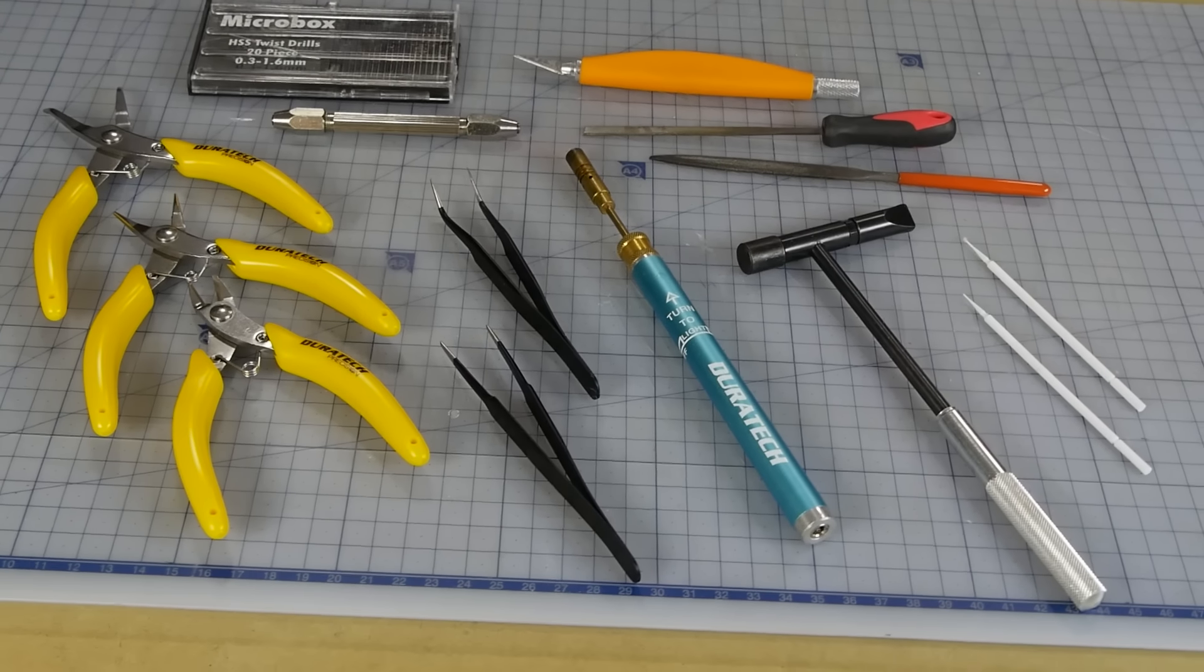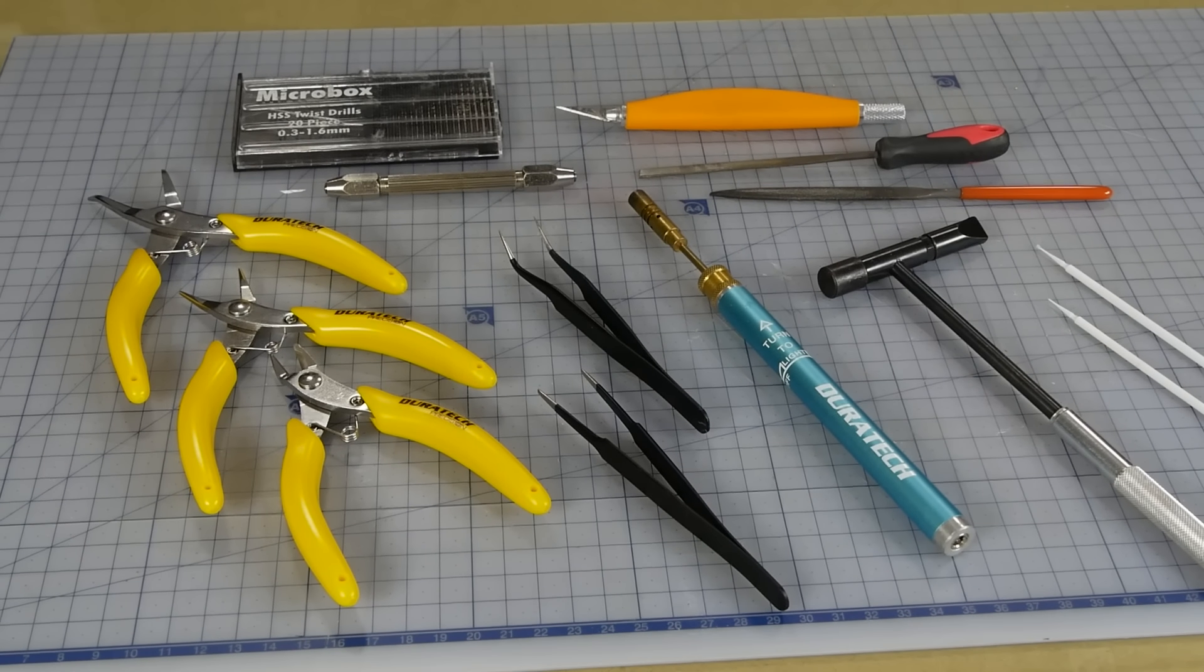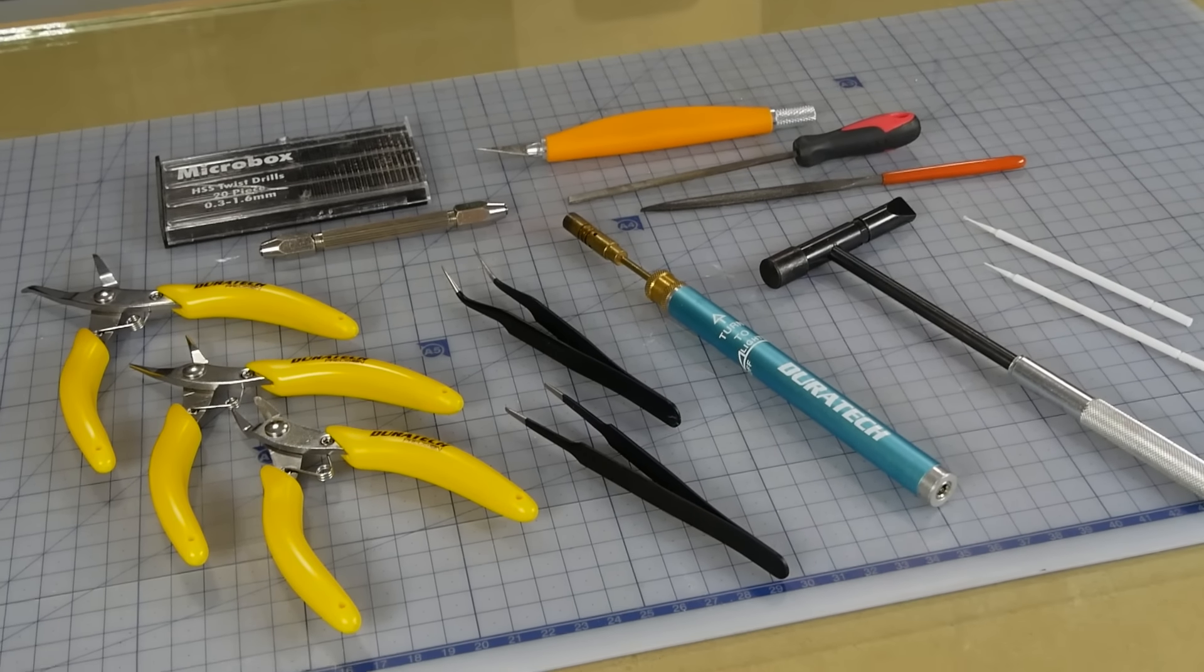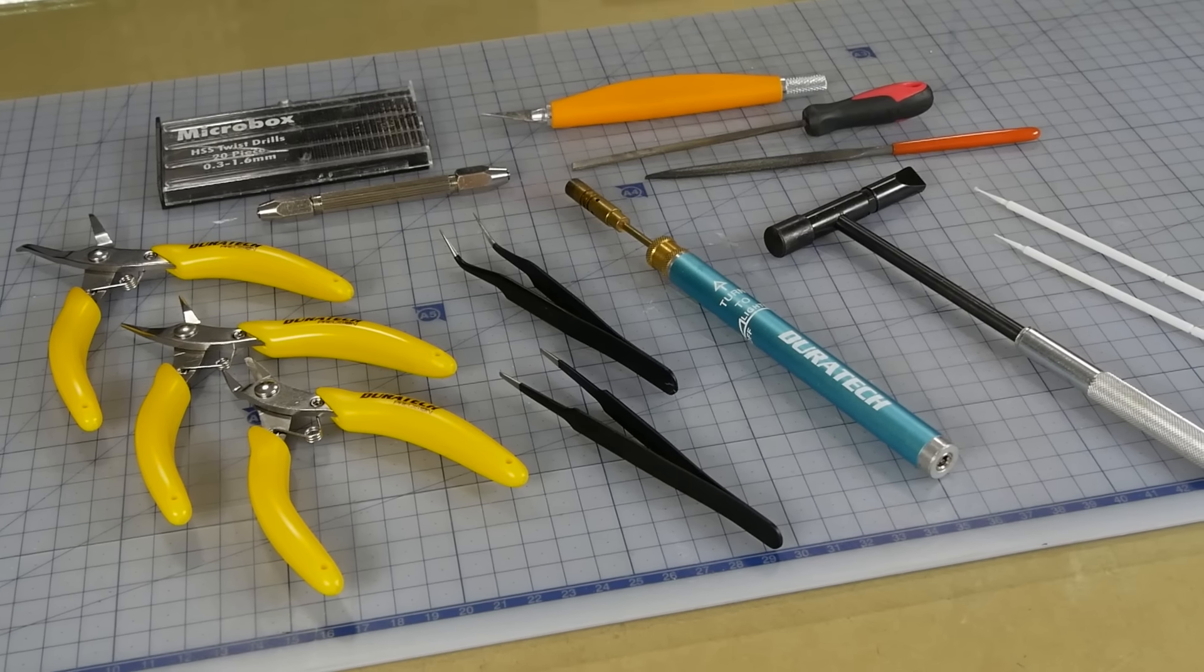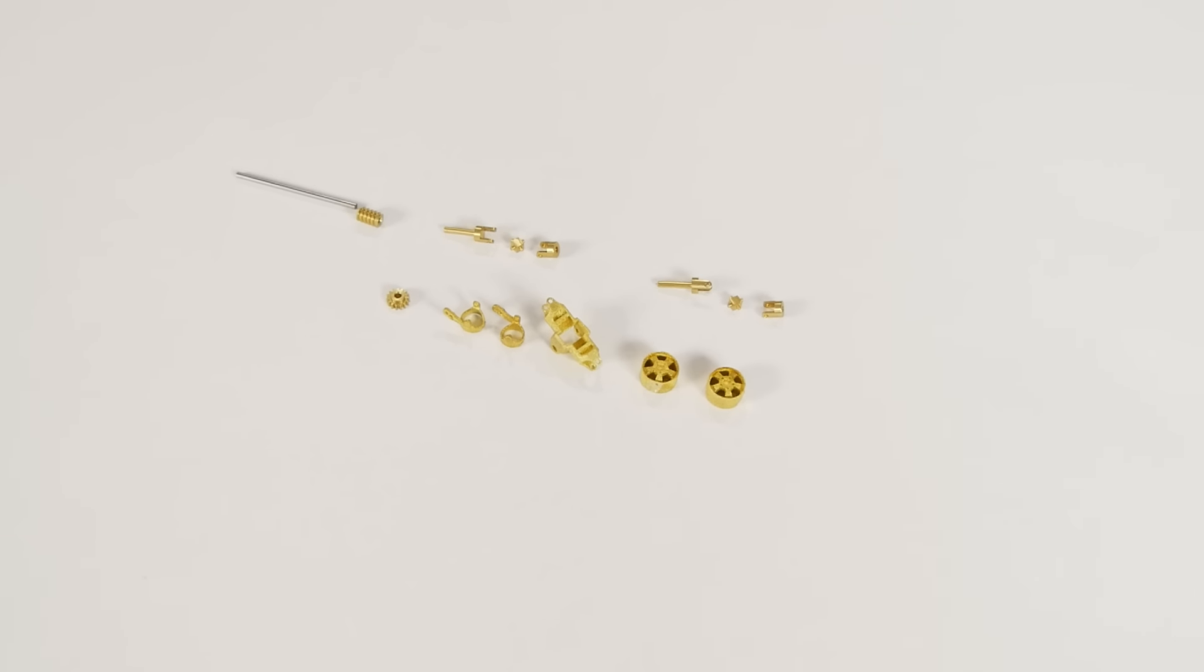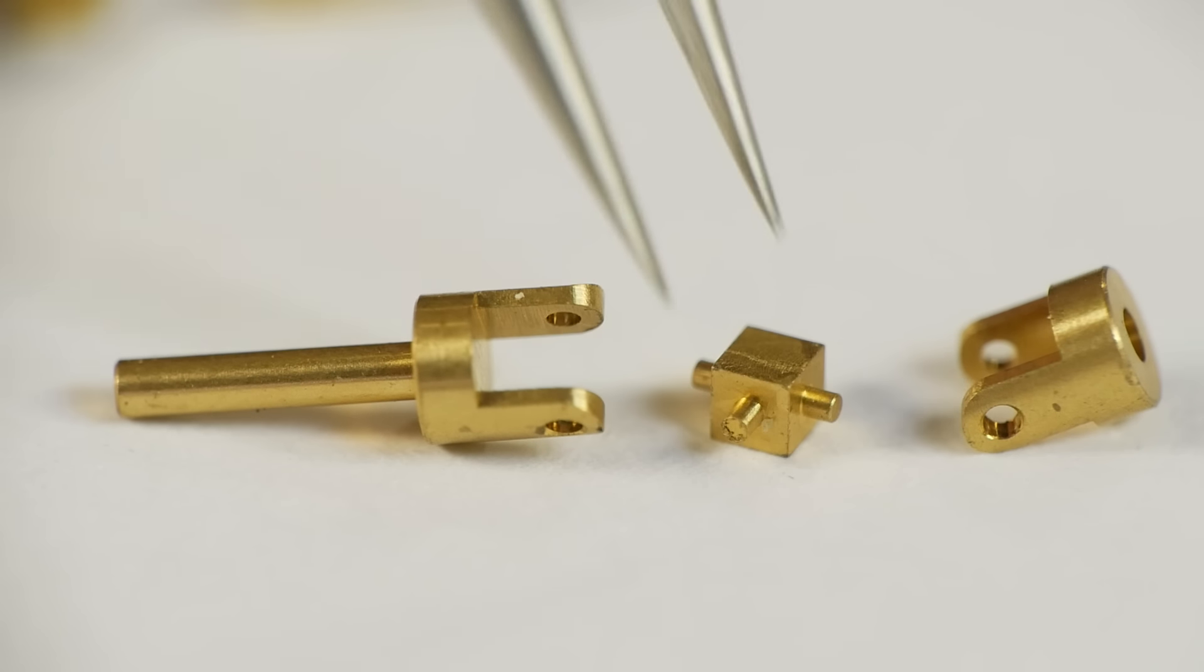You'll also need a range of tools to get the job done. Here is a selection of tools I ended up using throughout most of this project. So let's start with the front end and assemble the universal joints. It's crazy how tiny these parts are.